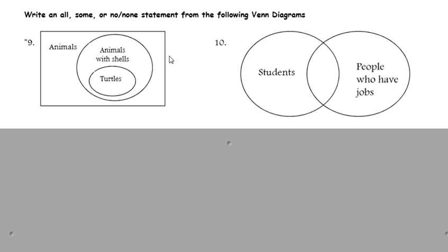Alright, let's look at number nine. We want to write an all, some, or none statement from the following Venn diagrams. So, remember, if you're reading it from the inside out, when the circle is completely surrounded by another circle, there's none left out on the outside, you can read it all. So, inside out, all turtles have shells.